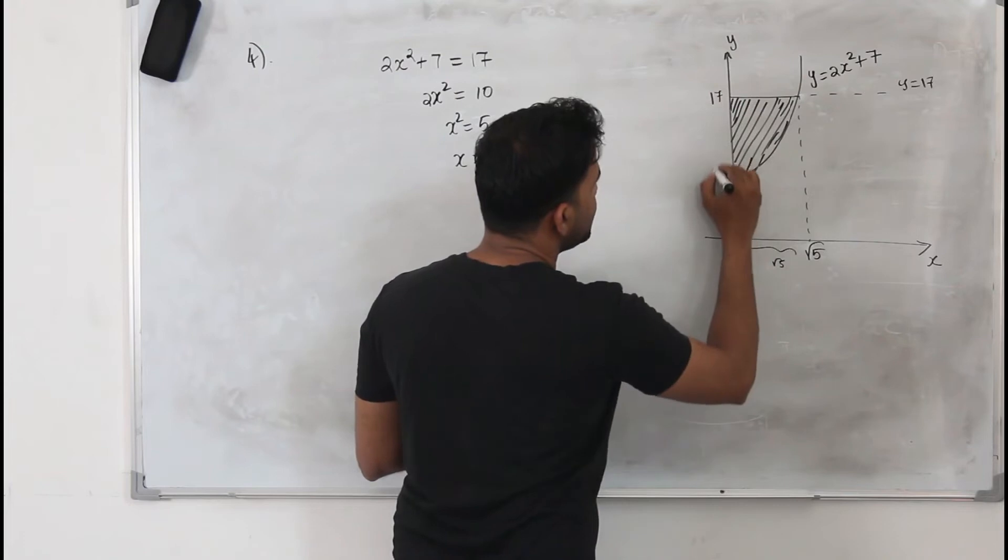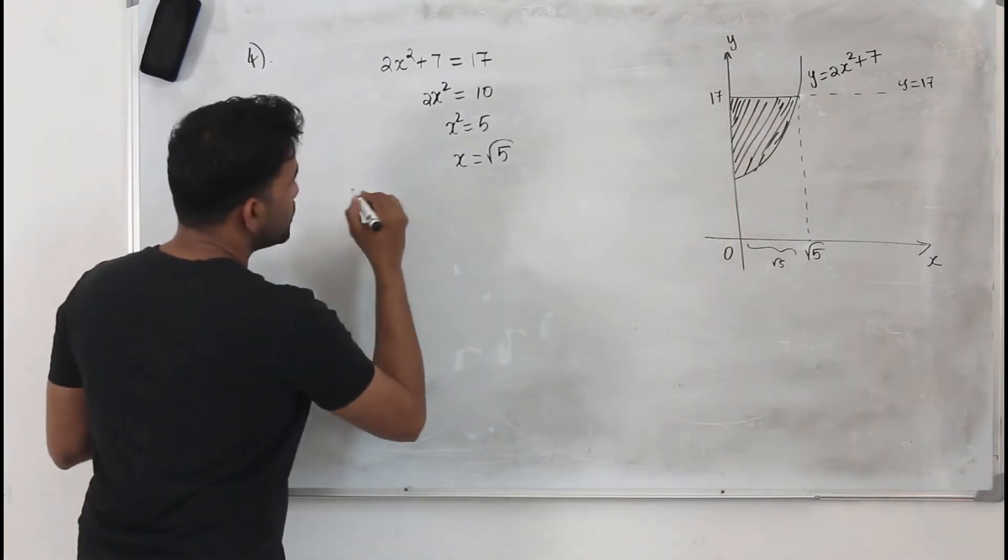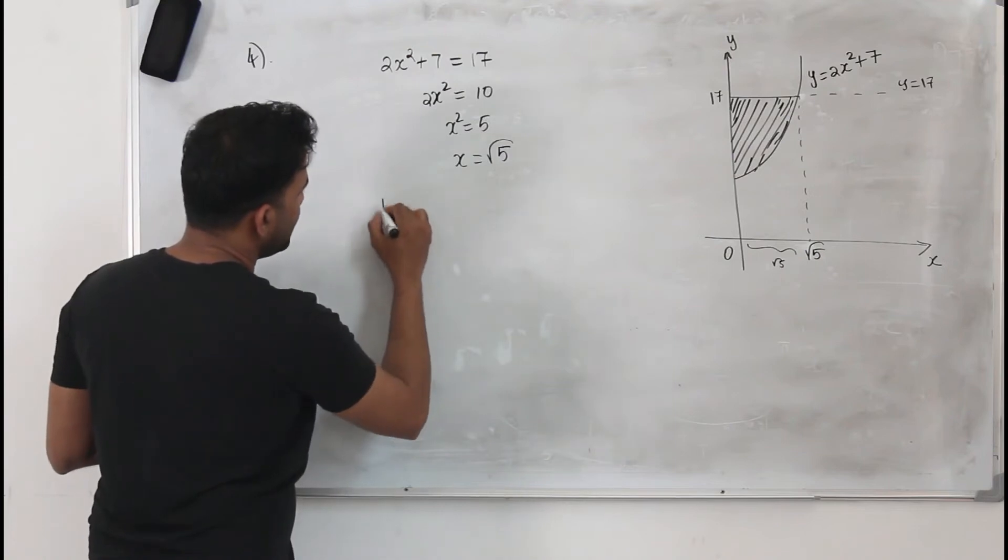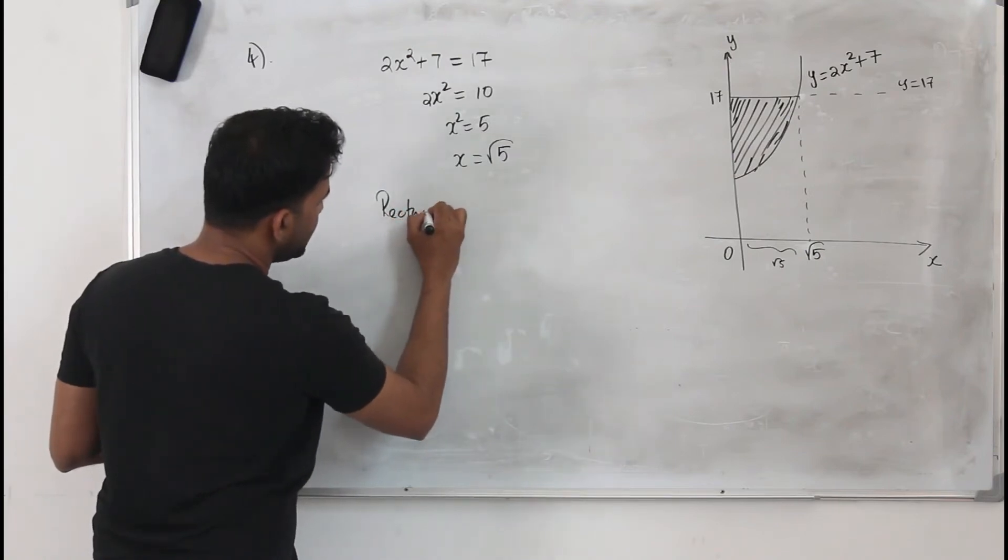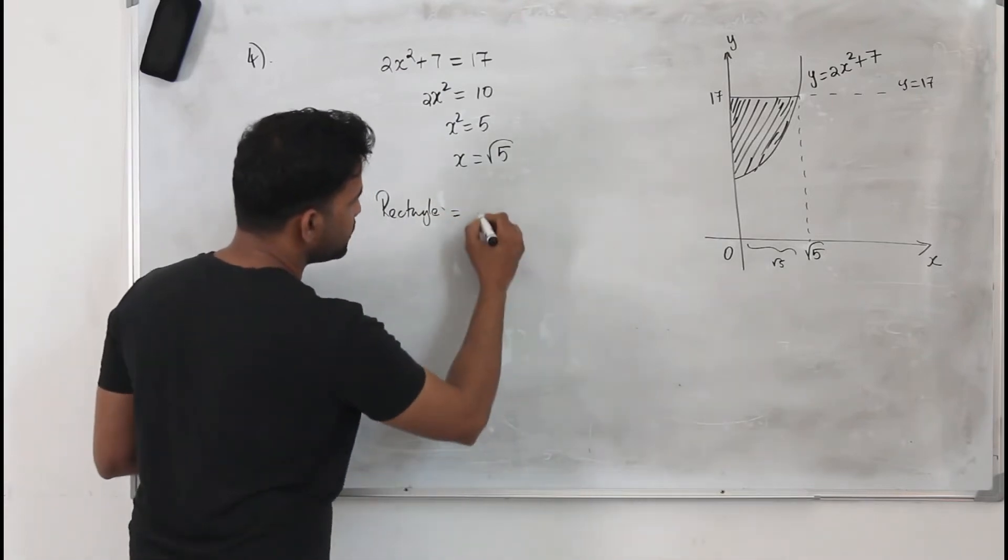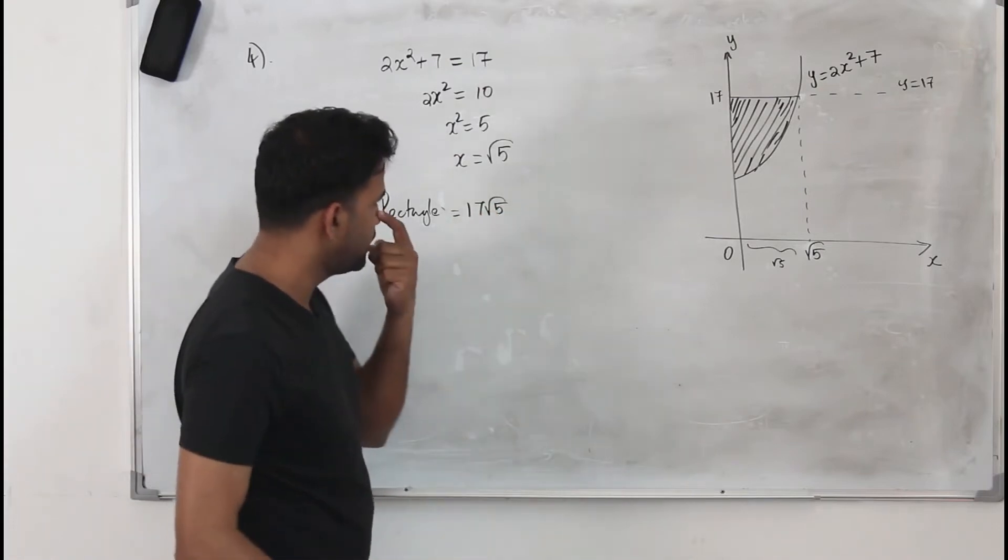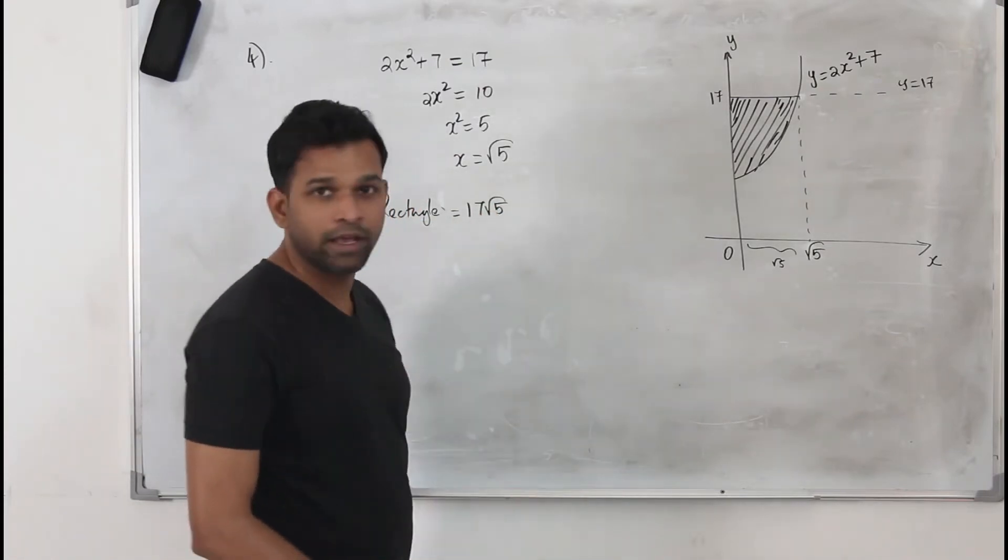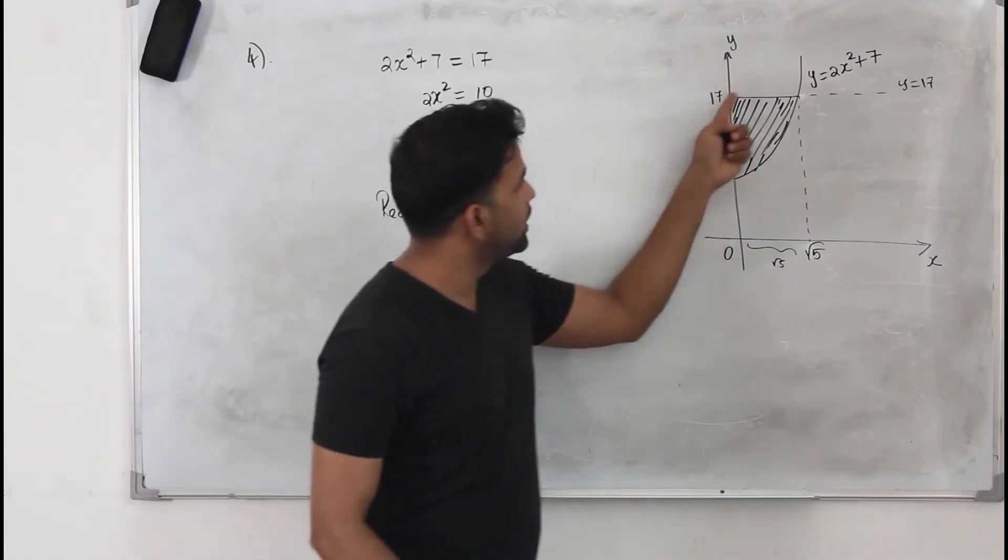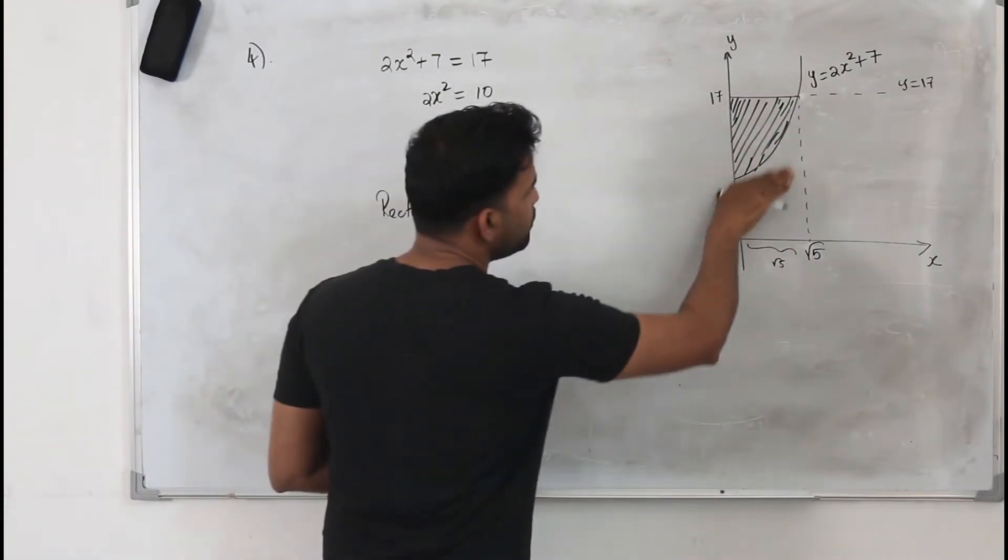And this whole length is 17 because the y value is 17. So the area of the rectangle will be length times breadth, 17 root of 5 square units. You have the area of the rectangle already.